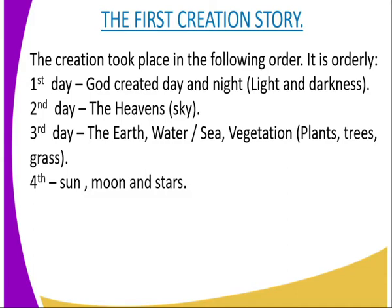The creation took place in the following order. On day one, God created day and night — that is light and darkness. On the second day, God created the heavenly sky. On the third day, God created the earth, water and sea, vegetation — and by vegetation we mean the plants, trees and grass.